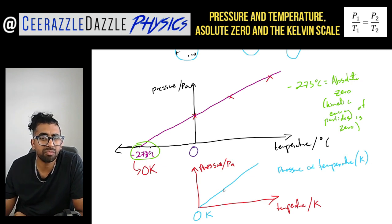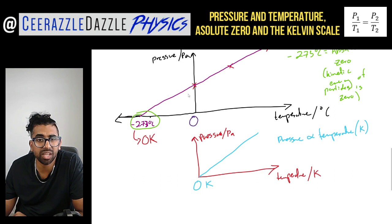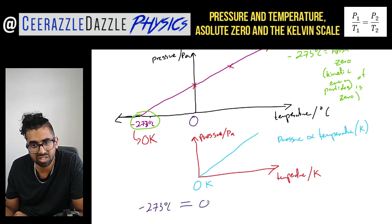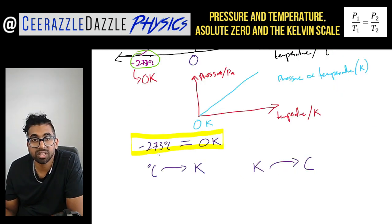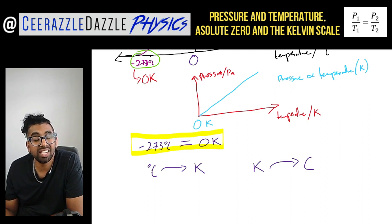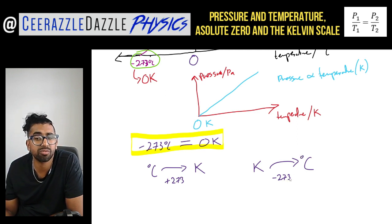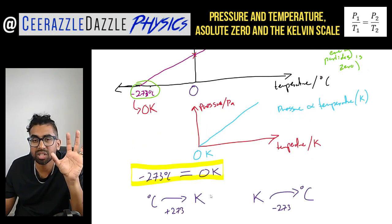To convert from degrees Celsius to Kelvin, minus 273 degrees Celsius equals zero Kelvin. To convert any value from degrees Celsius to Kelvin, simply add 273. To convert from Kelvin to degrees Celsius, simply subtract 273 from the value.